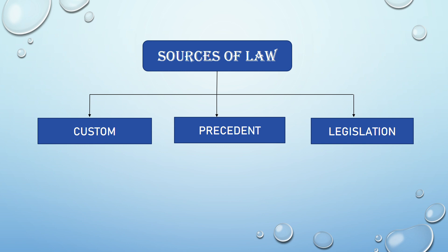The next source of law is legislation. It refers to the rules or laws enacted by the legislative organ of the government. It is one of the most important sources of law. The word legislation is derived from the words legis, meaning law, and latem, meaning making.